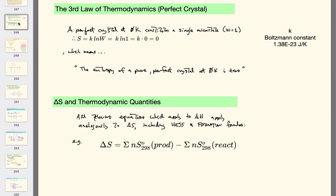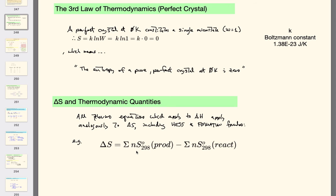ΔS and thermodynamic quantities: you have three thermodynamic quantities — ΔH, which you're familiar with; ΔS, which you're familiar with now; and ΔG, the third one. ΔG is the total energy. Just like heat, the total entropy in any system for any reaction is the sum of all the entropy in all of the products subtracted from the sum of all the entropy in all of the reactants — just like the hilltop thing again.